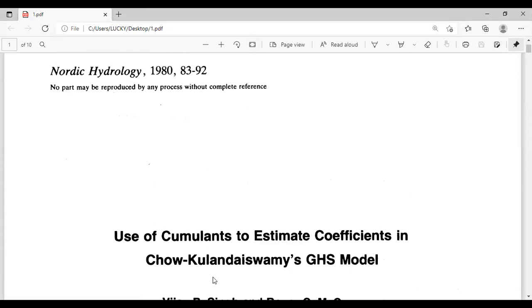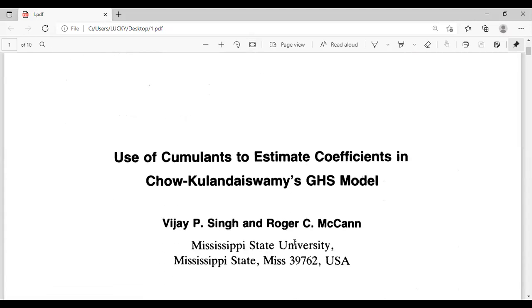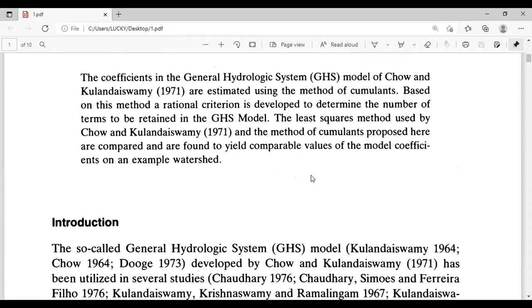We are using Chow and Kulandaiswamy's GHS model to estimate the coefficients. The coefficients in the general hydrologic system GHS model of Chow and Kulandaiswamy 1971 are estimated using the method of cumulants. Based on this method, a rational criterion is developed to determine the number of terms to be retained in the GHS model.